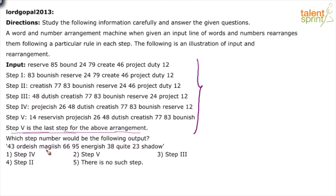The question is: what is the step number? Just by looking at the given step you should be able to identify it. Viney Kumar got step 3, Ravi Kumar got step 3 — step 3 is correct. How do we know? We established that in each step, when a word is moved, the last letter is removed and 'ish' is added.